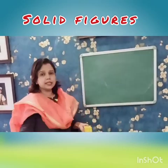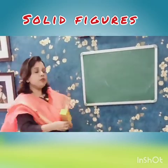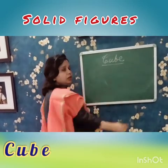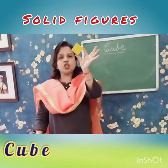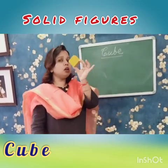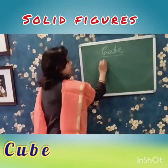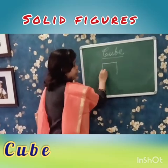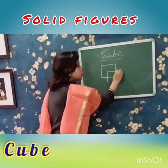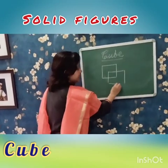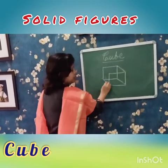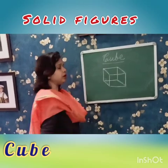Now let us learn about the next solid figure, which is a cube. This is the shape of a cube. To draw a cube, we take a square with all sides equal. Then we draw another square of the same measurement and we join the corners. This is the shape of a cube.